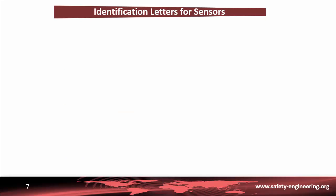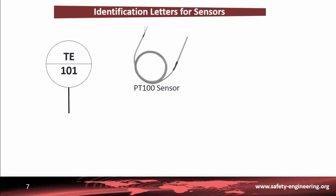A classic example is the PT100 sensor for measuring temperature. The primary element is the sensor alone — just the PT100 — and the output of this sensor is the resistance as a function of temperature. The symbol associated with this sensor is TE: T for temperature and E for primary element.